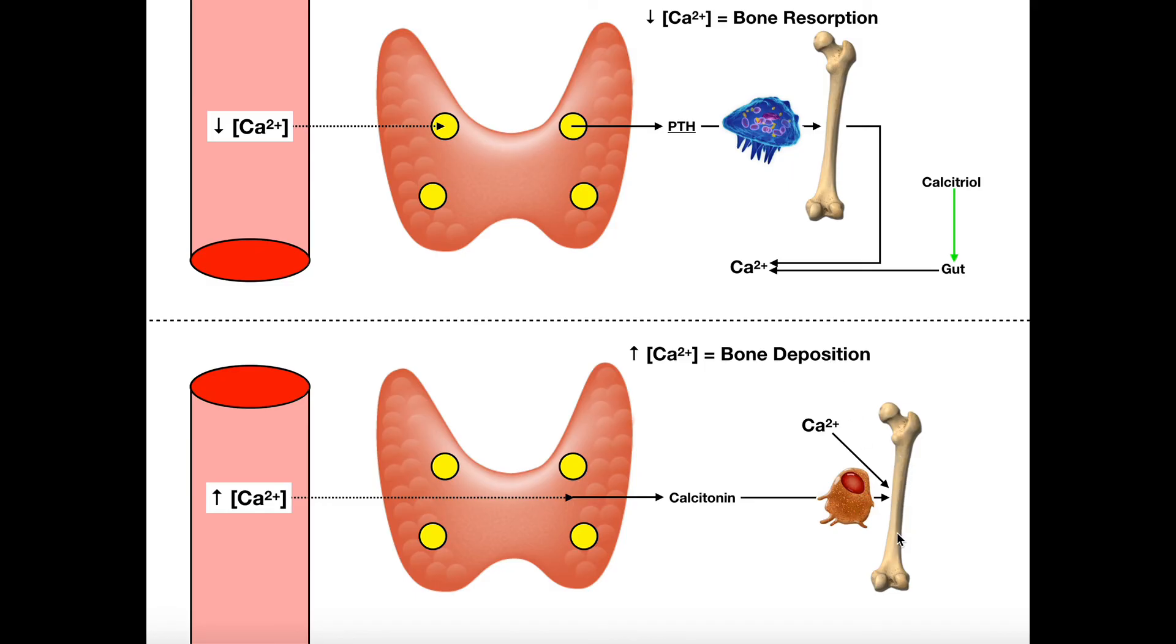So in order to deposit more bone matrix, they're going to have to take calcium, which was from the blood, and put it into the bone. And so if you think about what that will do, you're taking calcium out of the blood, putting it into bone, and so that will actually decrease blood calcium levels. So in some ways, the osteoblasts and osteoclasts are actually really more regulating blood calcium levels, and their effect on the bone tissue is more a side effect, if you want to think of it that way.